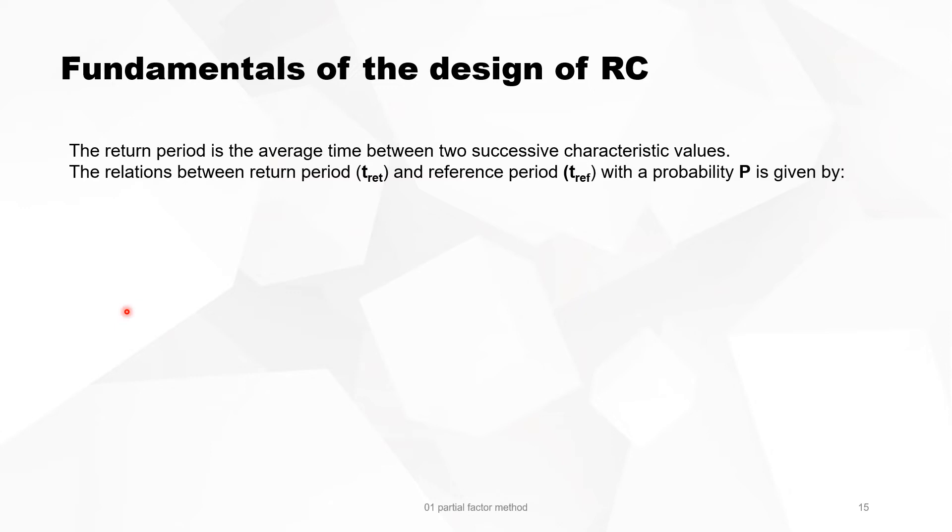Now let's try to explain something about this method. We start with the difference between return period and reference period. The return period is the average time between two successive characteristic values. The relation between the return period and the reference period with a probability P is given by this classic formula of statistics.